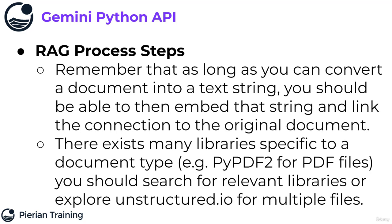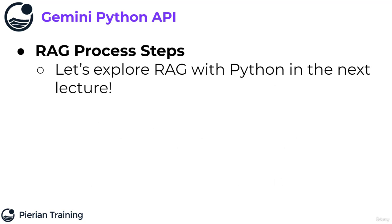I should point out there exist many Python libraries specific to a document type. For example, there's PyPDF2 for PDF files — so if all your documents are PDFs, you can use PyPDF2 to extract all the text from them, then vector embed that text and match a vector to the text to pass along with the augmentation of the original query. There's also a really cool library called Unstructured — you can go to unstructured.io — that can accept multiple file types. With all this being said, let's actually get some hands-on practice and explore RAG with Python in the next lecture. I'll see you there.